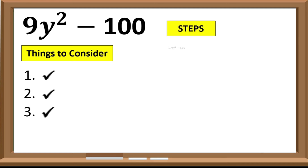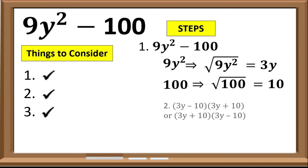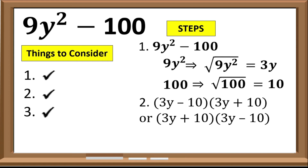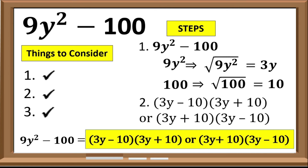Step 1: solve the principal square root of the first and second term. The principal square root of 9y² is 3y, and the principal square root of 100 is 10. Step 2: follow the given format. So the factors of 9y² − 100 are either (3y − 10)(3y + 10) or (3y + 10)(3y − 10).